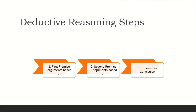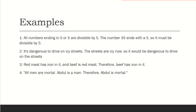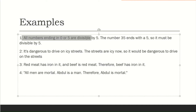The first premise and second premise are the arguments or hypotheses on which the conclusion is based. For example, the first premise is: all numbers ending in zero or five are divisible by five. This premise, on which the conclusion is based, must be true.